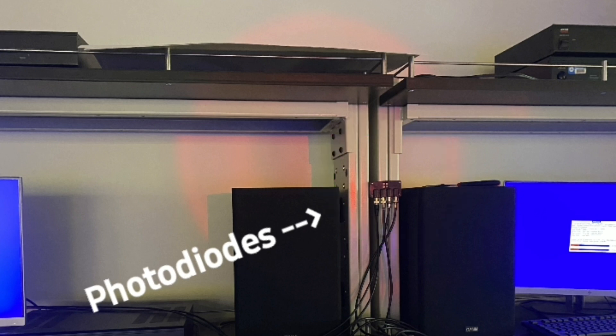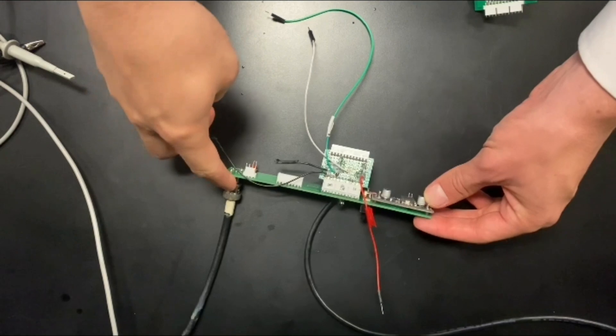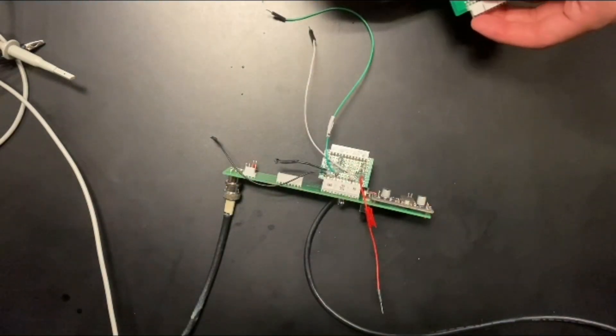If that's true, then you should have a signal coming in here that's very weak. That signal will go into your receiver card to be amplified.